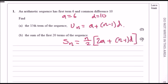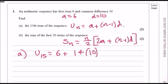This is easy marks. For part a, the 15th term u_15 is 6 plus (15 minus 1) times d, which is 6 plus 14 times 10. Putting that into the calculator you should get 146.